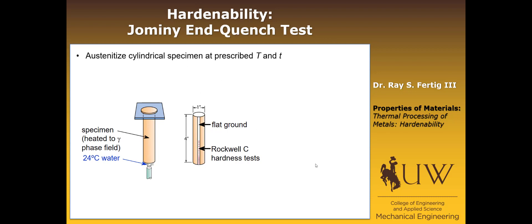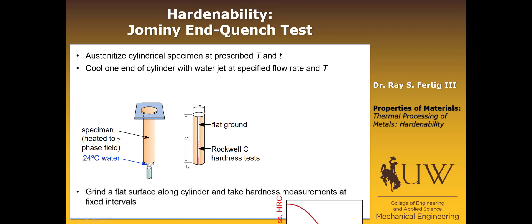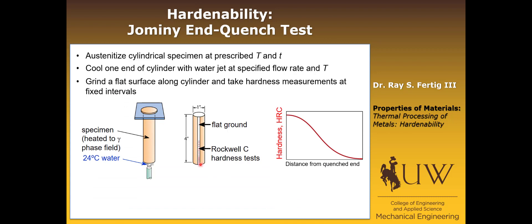First, we austenitize a cylindrical specimen at some prescribed temperature and time. Then we cool one end of that specimen by spraying water, which rapidly cools that end and slowly propagates up the cylinder. Once we've done that, we grind a flat region on the cylinder and then perform hardness tests at intervals along that flat region, measuring hardness as a function of distance from the quenched end. That is how we measure hardenability — hardenability isn't hardness, but rather measuring hardness as a function of distance from the quenched end, telling us how easy it is to form martensite in a particular alloy.